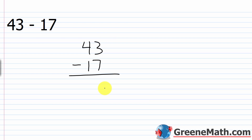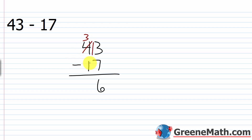We're going to use the procedure called borrowing. I go to the next digit to the left and borrow 1. So I cross this 4 out, subtract away 1, and that gives me 3. Now this 4 is a 3, and I send it over to the column to the right, putting a 1 in front of the digit in that column. So now this 3 becomes a 13 and I'm able to subtract. I can say 13 minus 7 is 6, and then move to the column to the left: 3 minus 1 is 2. So I end up with 26.